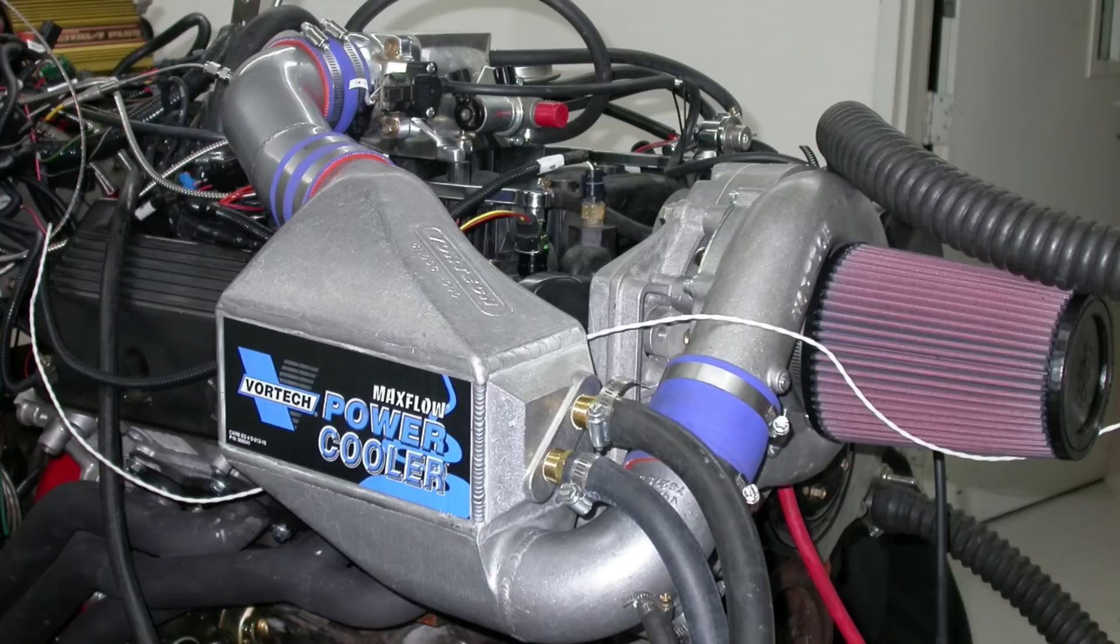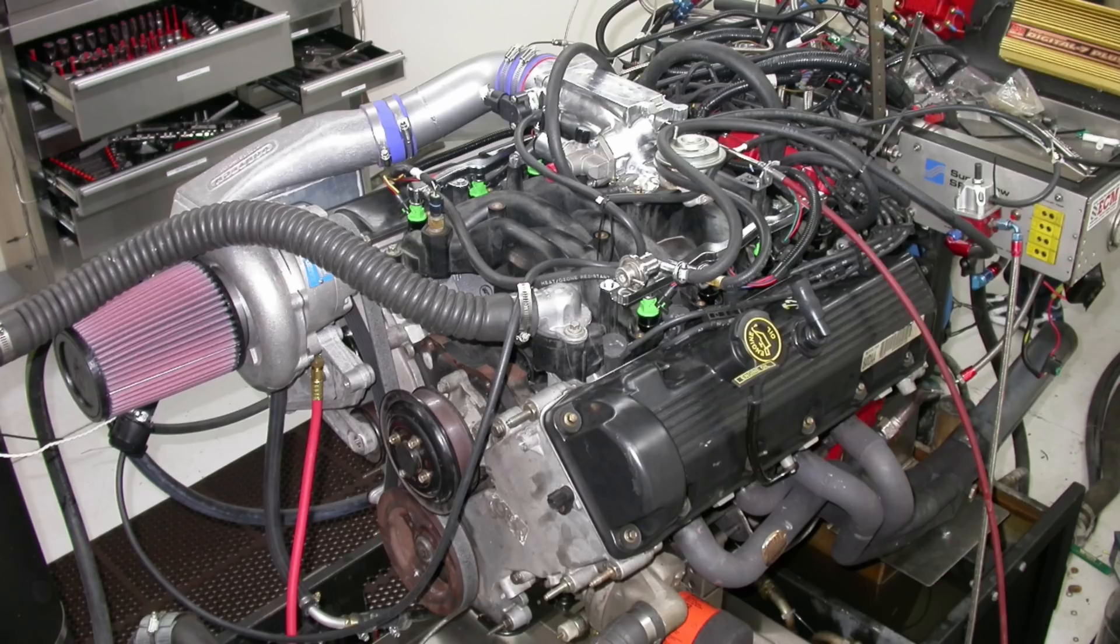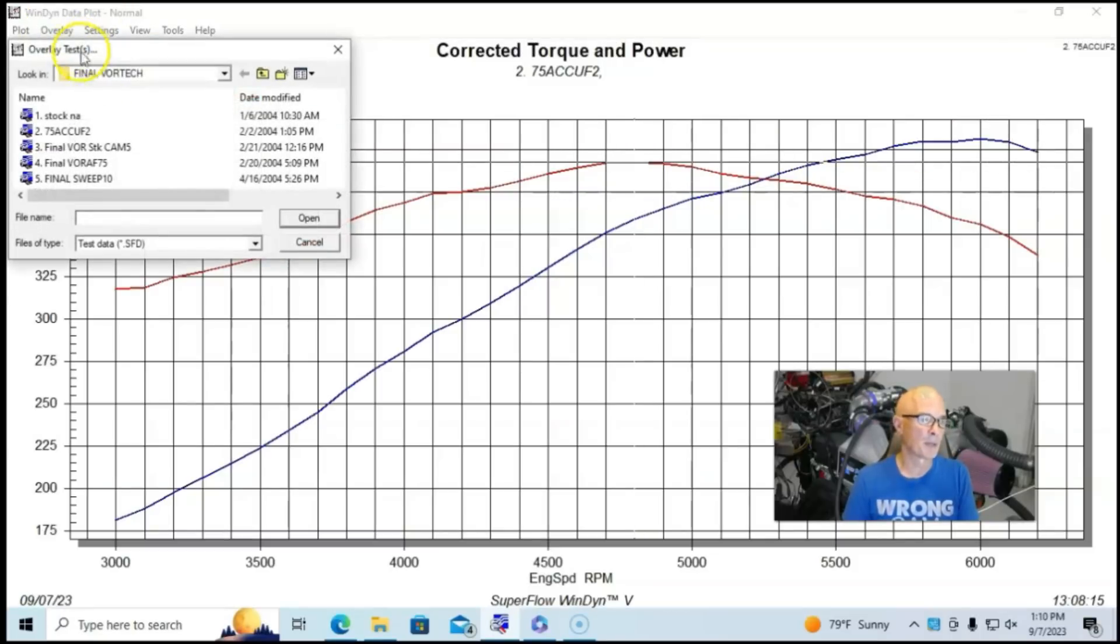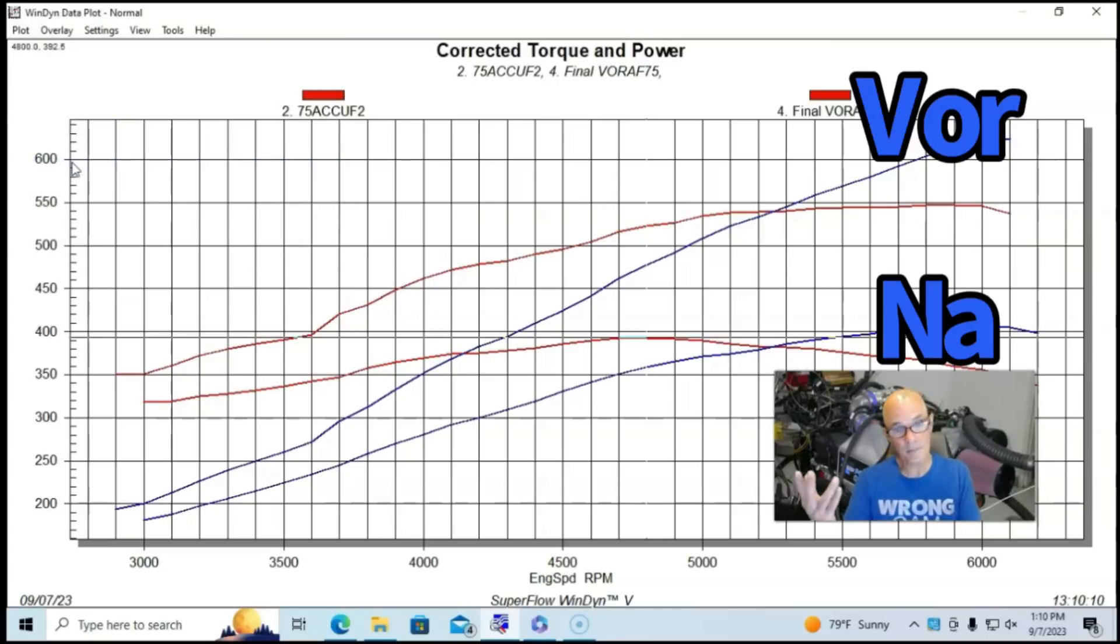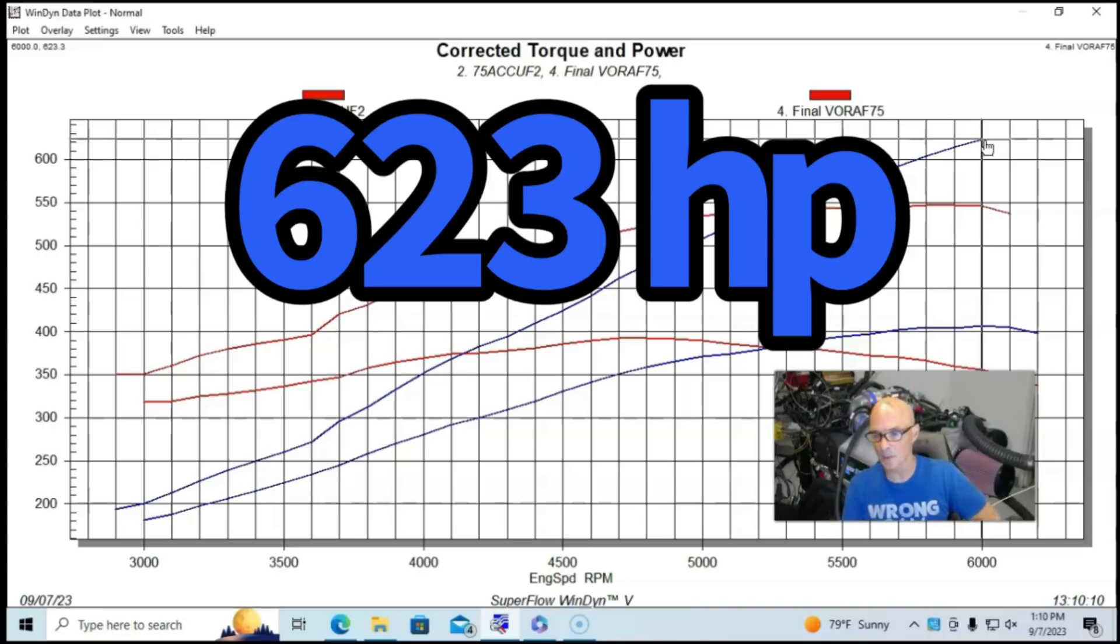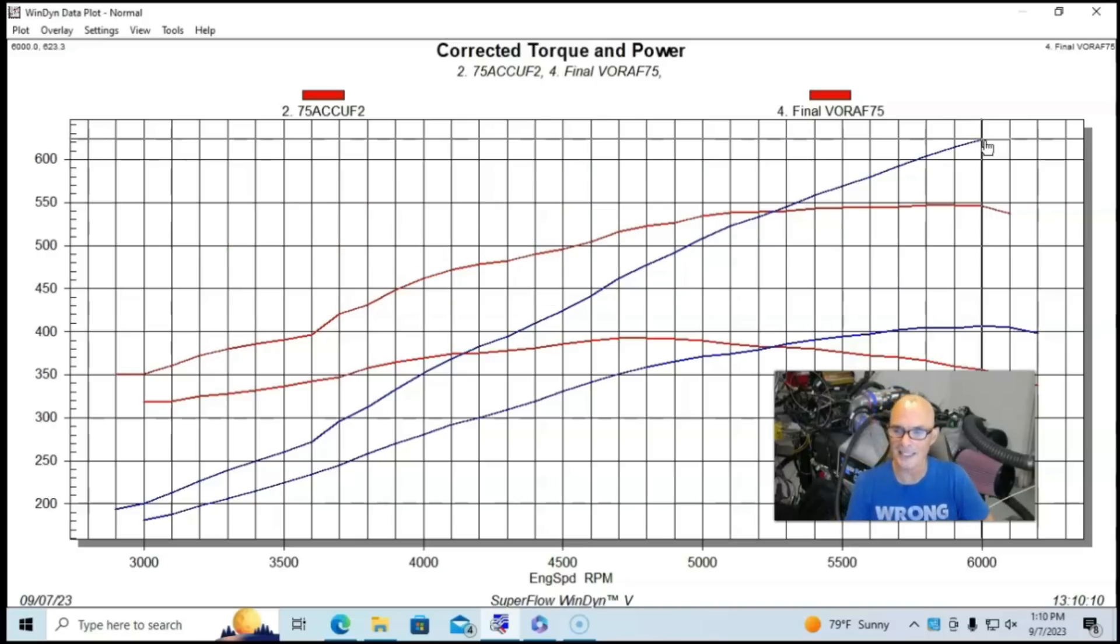So we'll go ahead and take a look and see again, 400 horsepower, 406 and a half and 392 foot pounds. Here's what happened when we added our Vortec supercharger. You can see we're up quite a bit, up over 600 horsepower, 620 something horsepower. The power curve would have continued to climb past 6,000 RPM. We ran into,